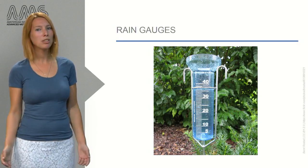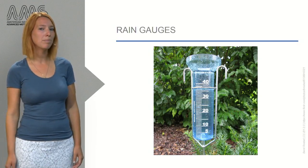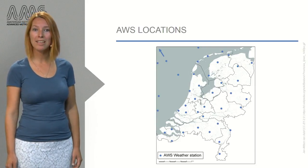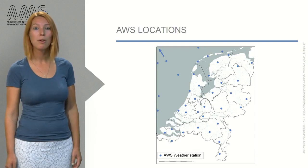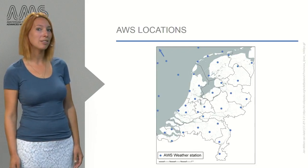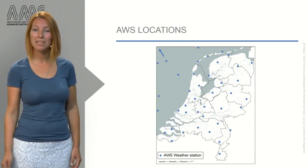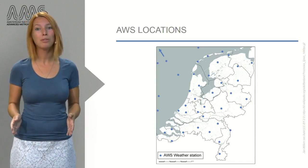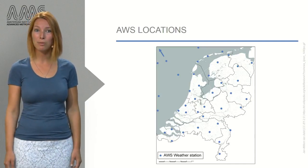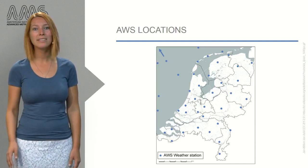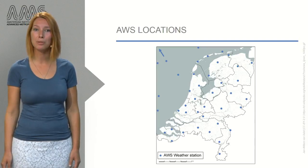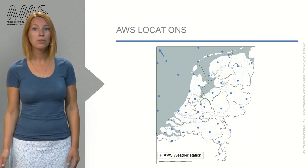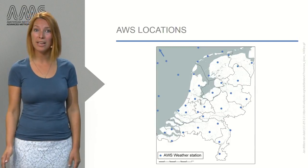What measurements are we talking about here? In the Netherlands, there are over 30 AWS locations where the Royal Netherlands Meteorological Institute measures rainfall with high-quality automatic rain gauges at 10-minute intervals. Additionally, there are approximately 325 official manual gauge locations where daily rainfall is registered. This is nowhere near the desired spatial resolution of a gauge every 100 meters, and these gauges are generally not located in urban areas.